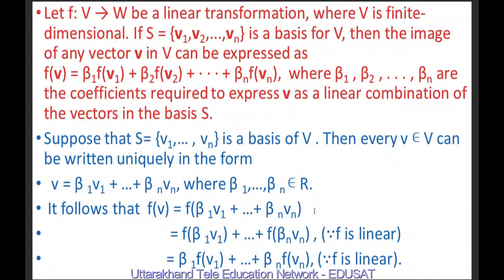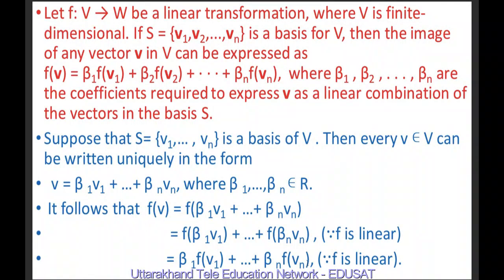Since F is linear, it preserves vector addition, meaning F(α + β) = F(α) + F(β). So this becomes F(β₁V1) + F(β₂V2) + ... + F(βnVn). Also, because F is linear, it preserves scalar multiplication, so F(β₁V1) = β₁·F(V1) and so on. Hence, F(v) = β₁·F(V1) + β₂·F(V2) + ... + βn·F(Vn).